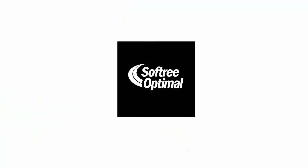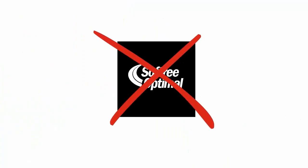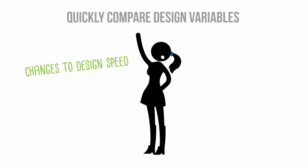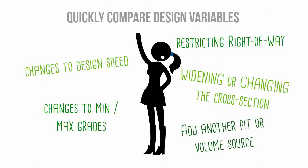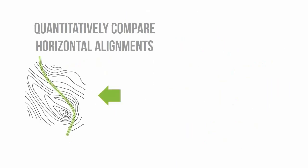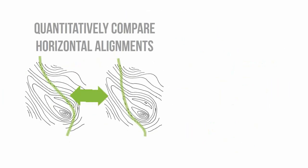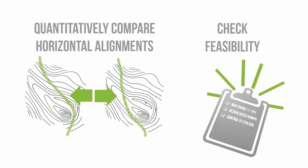Softree Optimal is not a black box — it's an engineering tool. Jane can quickly evaluate the cost impact of different changes to her design. She can also quantitatively compare horizontal alignments and quickly run feasibility tests.